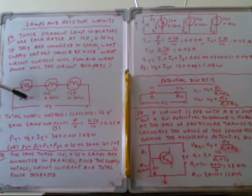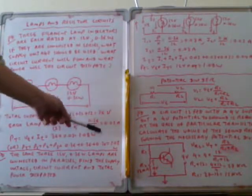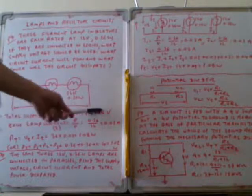For current calculation, I = P/V = 0.36/12 = 0.03 amperes flowing through all lamps. The total power is V_total × I = 36V × 0.03A = 1.08 watts. This is how you calculate the total power and current.